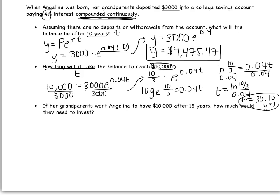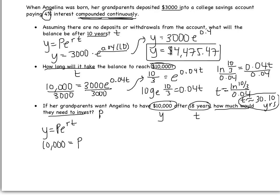Now the last question: if her grandparents want Angelina to have $10,000 after 18 years, how much would they need to invest? 'How much to invest' means I'm looking for P. The $10,000 is Y, my ending amount, and 18 years is T. Setting up: 10,000 equals P times E to the RT, where I'm solving for P.